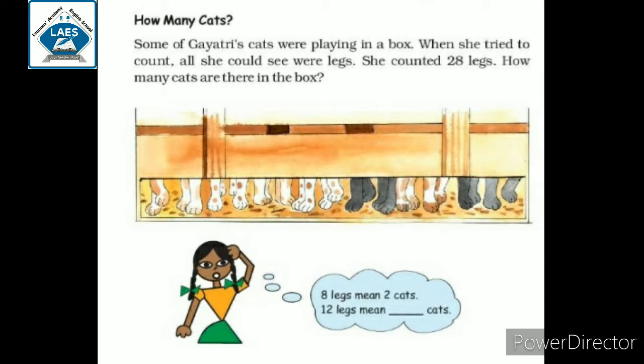Some of Gayatri's cats were playing in the box. When she tried to count, all she could see were legs. She counted 28 legs. How many cats are there in the box?